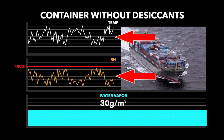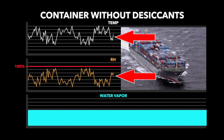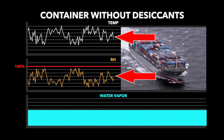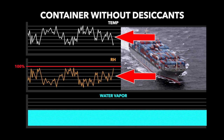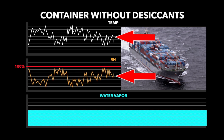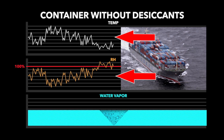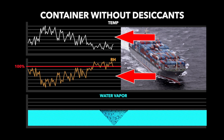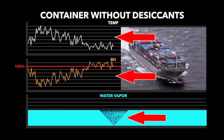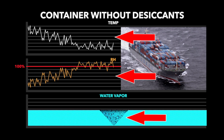As long as the RH remains at or below 100%, the suspended water vapor will not condensate. When the temperature starts to cool inside a container, the RH level increases. Once the RH level reaches 100% and the temperature continues to drop, the air can no longer suspend all the water as a vapor.